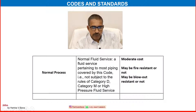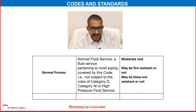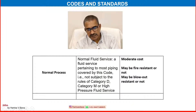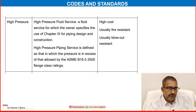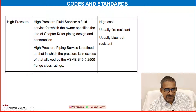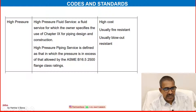Normal fluid service pertains to most piping covered by this code — that is, piping not subject to the rules of Category D, Category M or high pressure fluid service. On the cost side, it is moderate cost and may or may not be fire resistant or blowout resistant. High pressure fluid service is one in which the owner specifies the use of Chapter 9 of piping design and construction. High pressure piping is defined as that in which the pressure is in excess of that allowed by ASME B16.5 Class 2500 flange rating. It is high cost, usually fire resistant and usually blowout resistant.